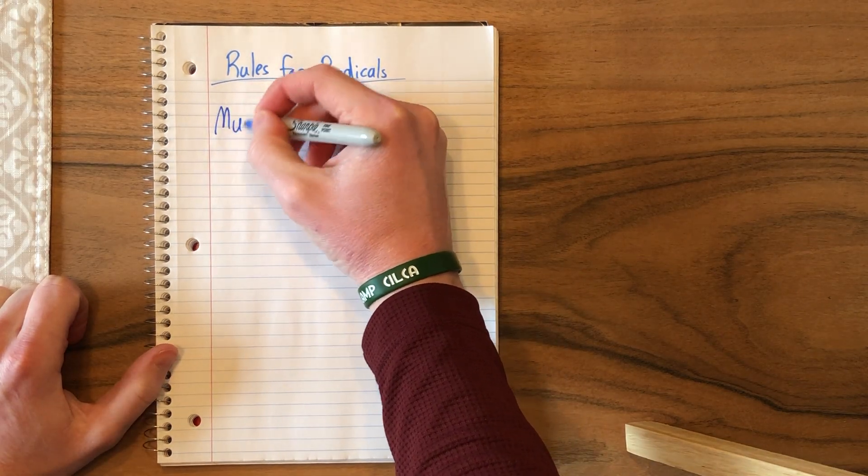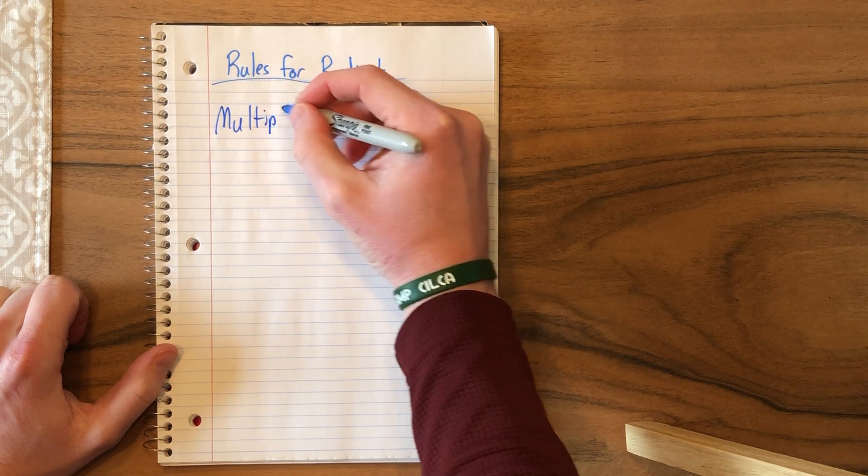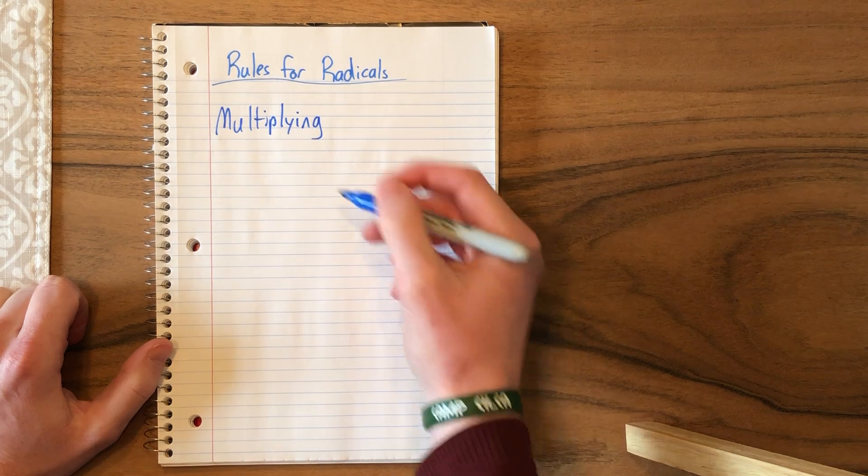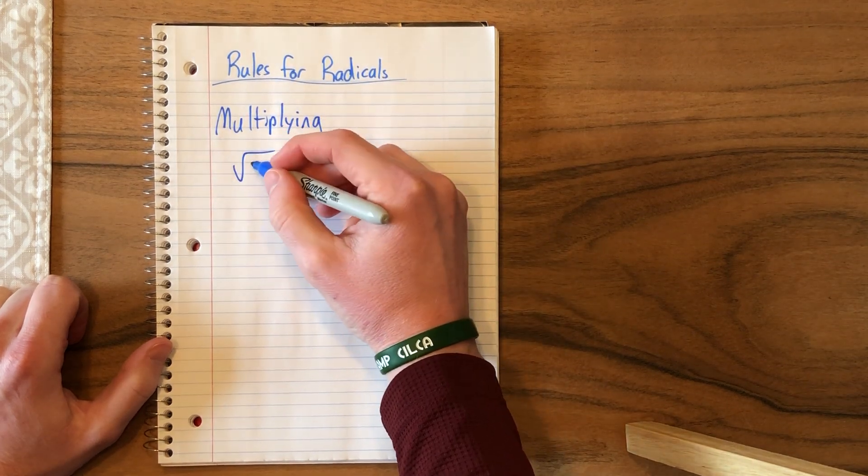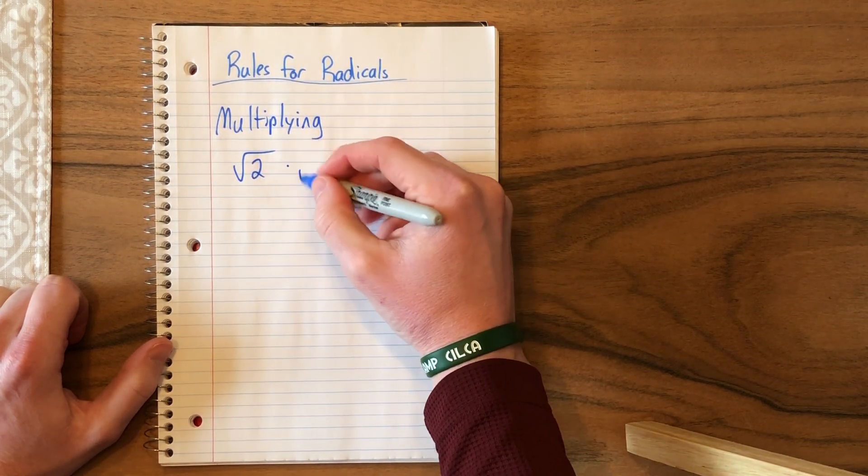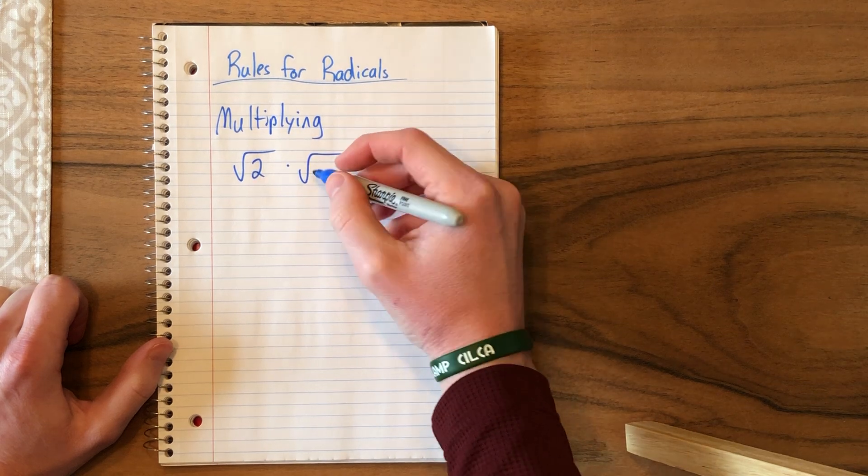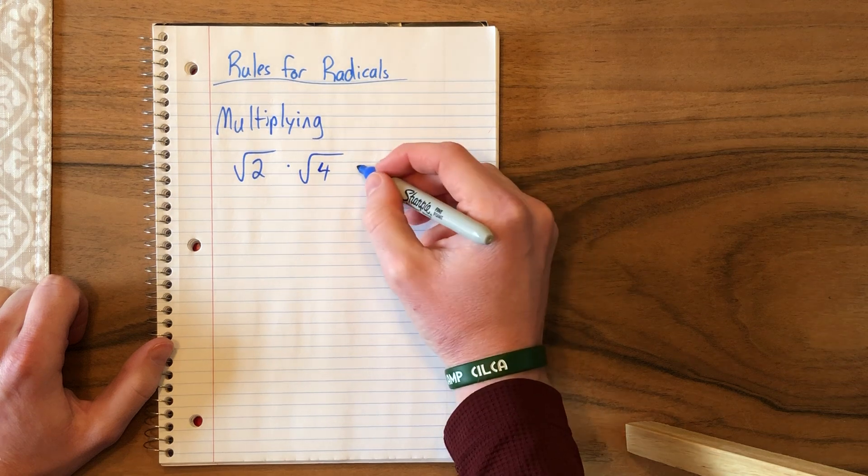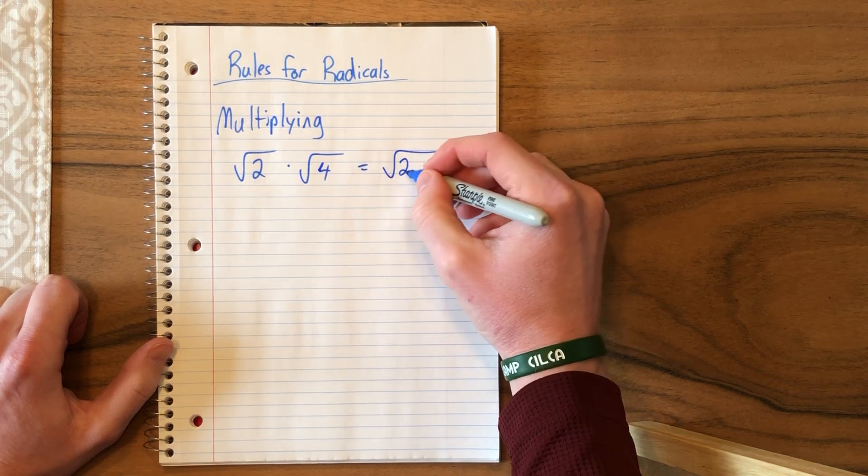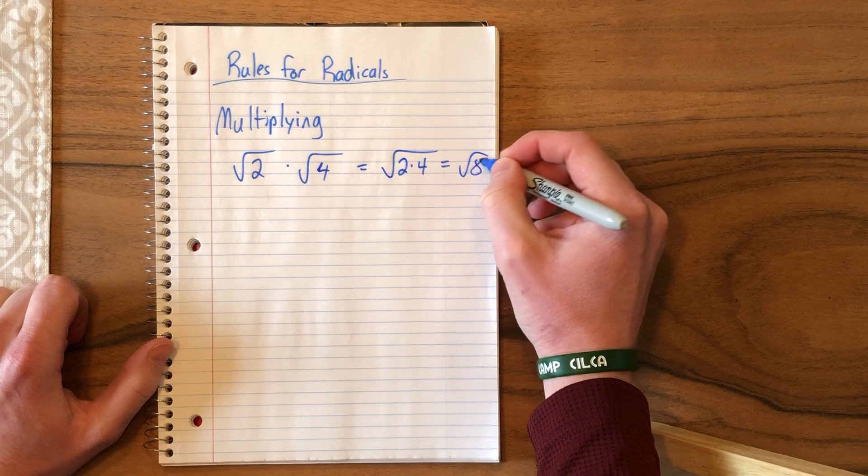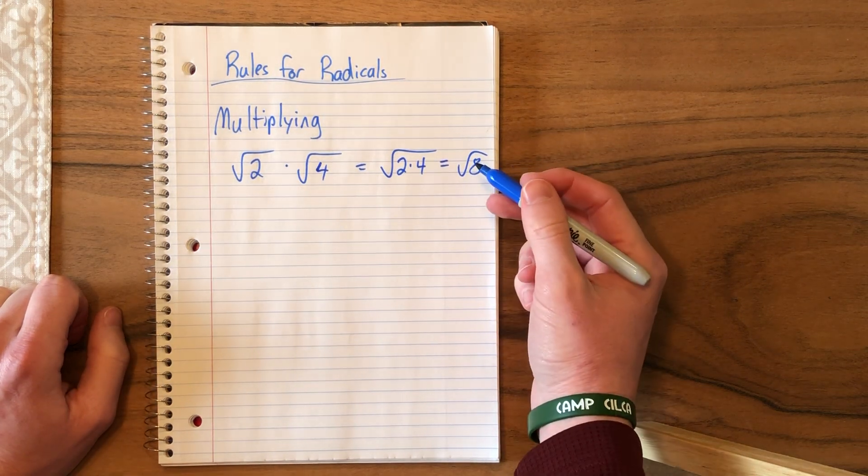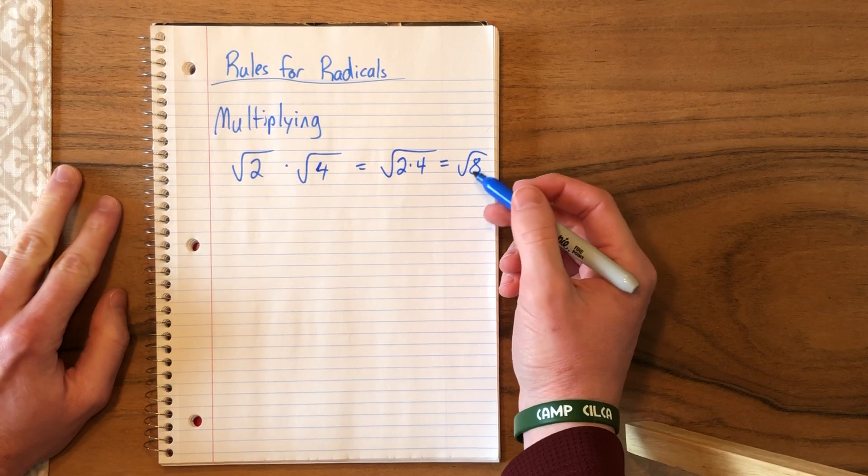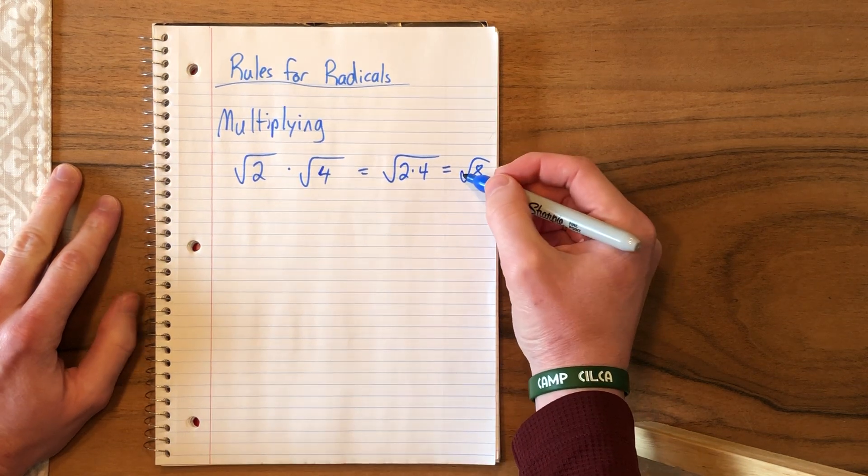So for multiplying, when you multiply, you take your square root, whatever it is, if you multiply by another radical, let's say it is 4, you take and multiply those numbers underneath, 2 times 4 to get the square root of 8. You can simplify this, but we're not going to work with that. We are just going to leave it for now.